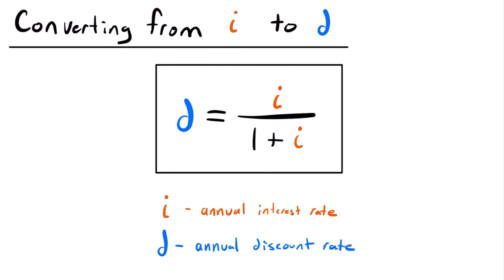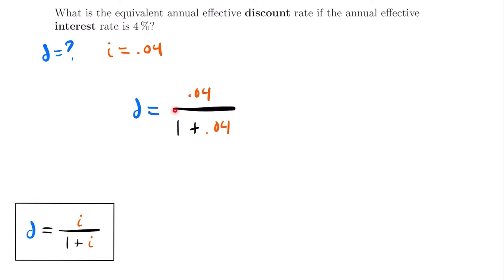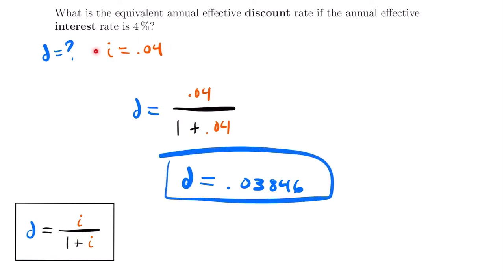Next, we have the conversion from an annual interest rate to an annual discount rate. This is fairly straightforward: D = I / (1 + I). For our example, what is the equivalent annual effective discount rate if the annual effective interest rate is 4%? We know I = 0.04. So D = 0.04 / (1 + 0.04) = 0.04 / 1.04 = 0.03846. That is the equivalent annual discount rate.